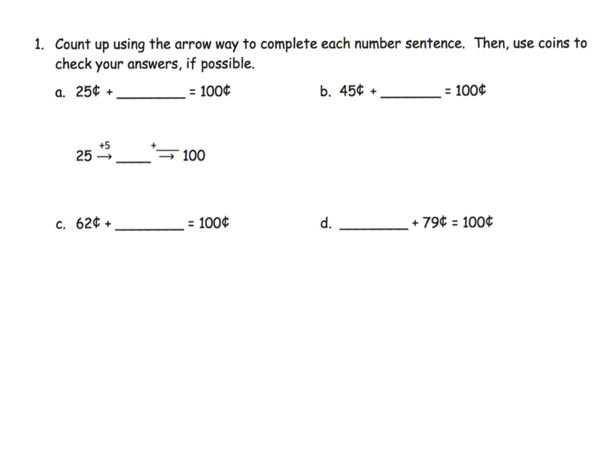We're going to count up using that arrow method to complete the number sentence, then use coins if we need to check our answers. The idea is we're going to start with 25 cents—what do we need to add to get to 100?